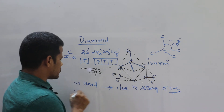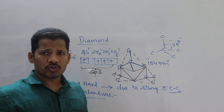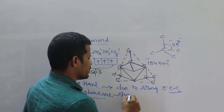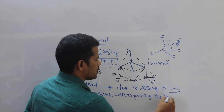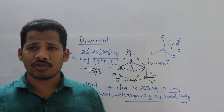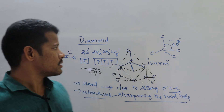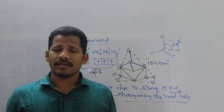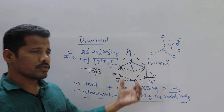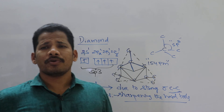In diamond there is only one type of bond length — the carbon-carbon bond length is 154 picometers. Diamond is a hard substance because of strong sigma C-C covalent bonds. It is used as an abrasive — meaning it is used for sharpening hard tools. Diamond is also used in jewelry because of its transparent property and high refractive index.